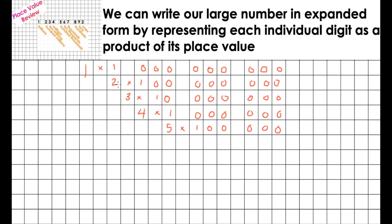And 6 in the ten thousands, so 6 times 10,000 — 6 is in that ten thousands place value. And we're now going to do 7 in the thousands, so 7 times 1,000. Getting quicker now as we go. 8 in the hundreds place value, so 8 multiplied by 100. 9 in the tens place value, so 9 multiplied by 10. And finally, 2 in the ones place value, so 2 multiplied by 1.